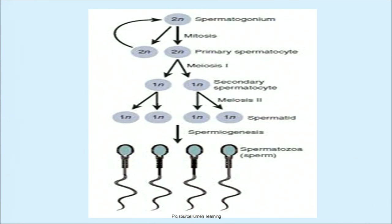Spermiogenesis: spermatids are transformed into sperms by a process called spermiogenesis. Spermiation: sperms are finally released from the seminiferous tubules by the process called spermiation. In the picture, the process of spermatogenesis starts with a diploid spermatogonium, which by mitotic division converts into primary spermatocytes, then meiosis I (reductional division) takes place, and by spermiogenesis spermatids are transformed into sperms.